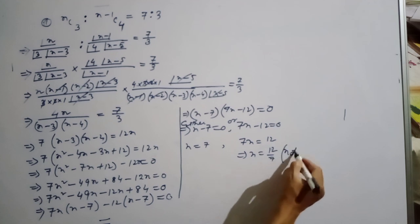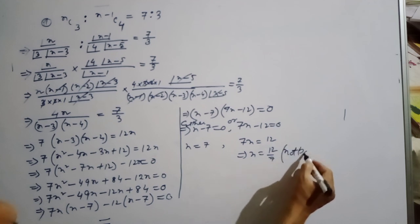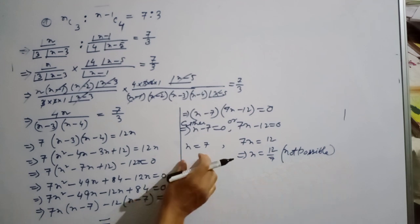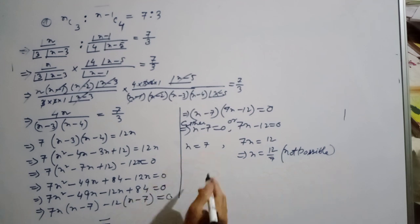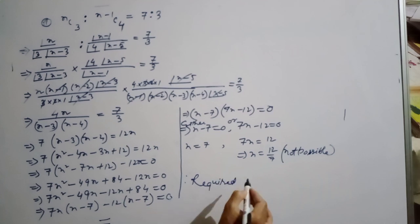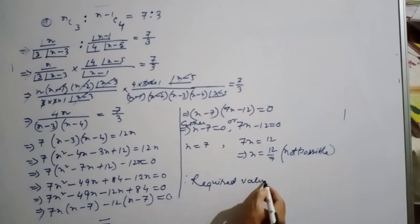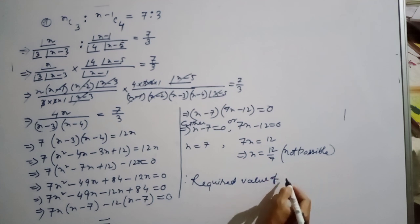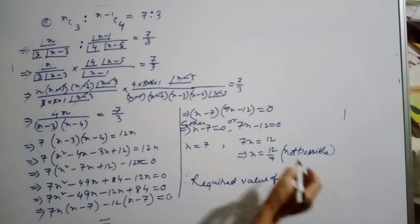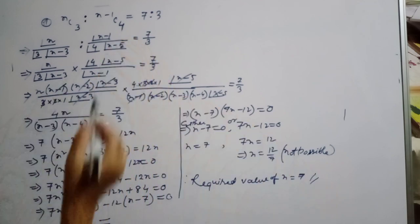12 by 7 is not possible since n must be a positive integer. Therefore the required value of n is equal to 7.